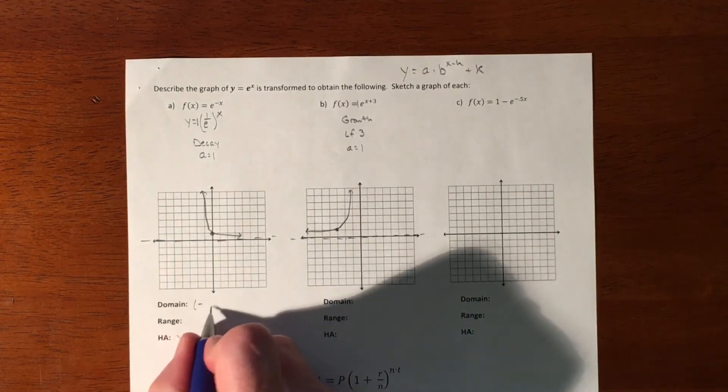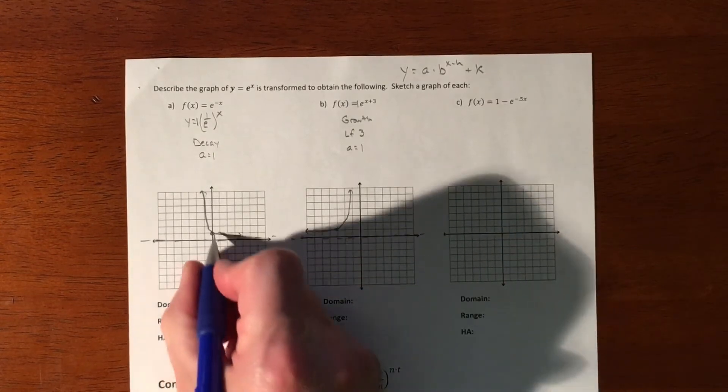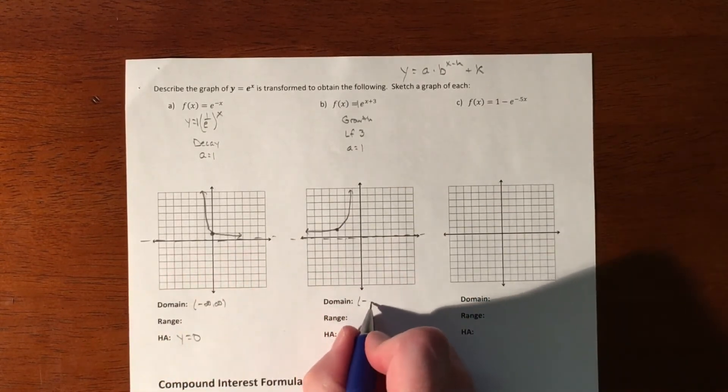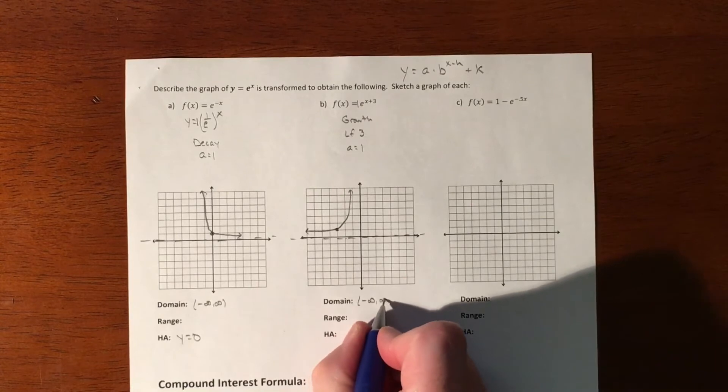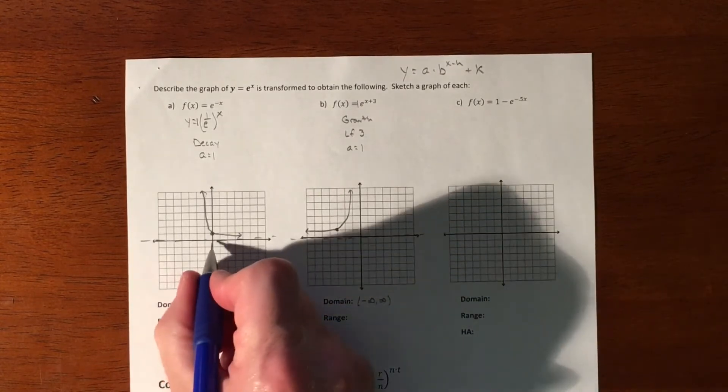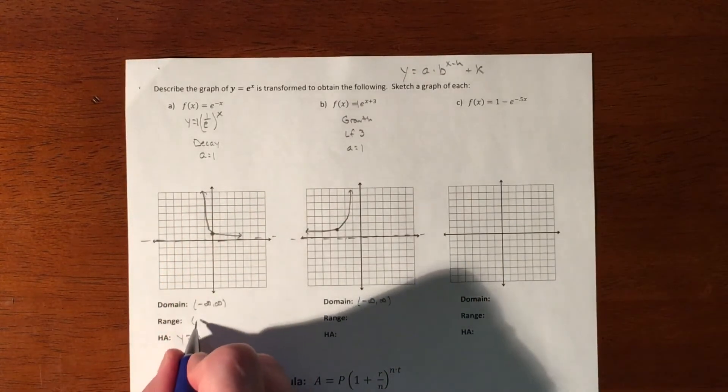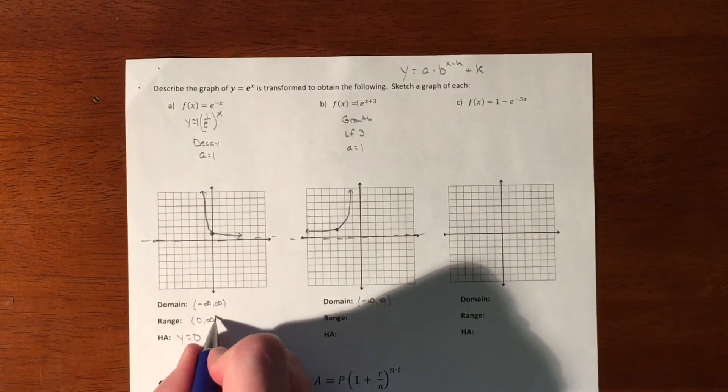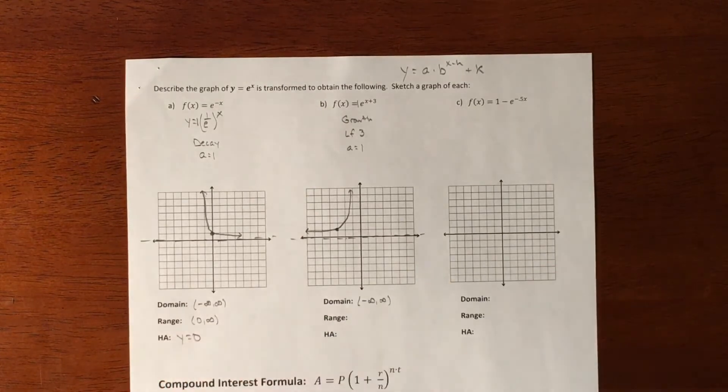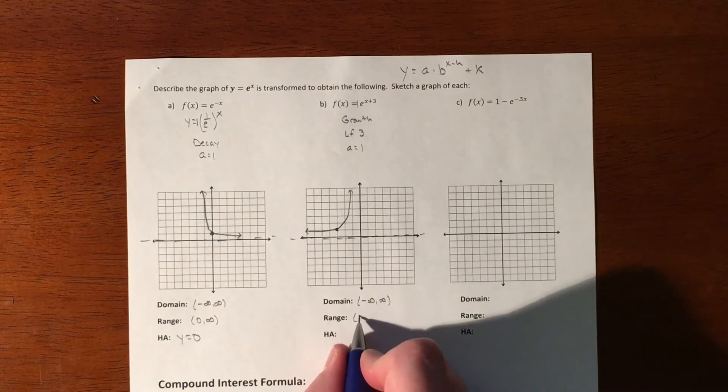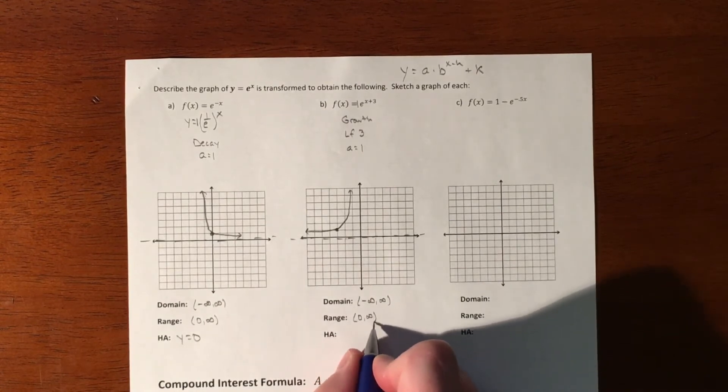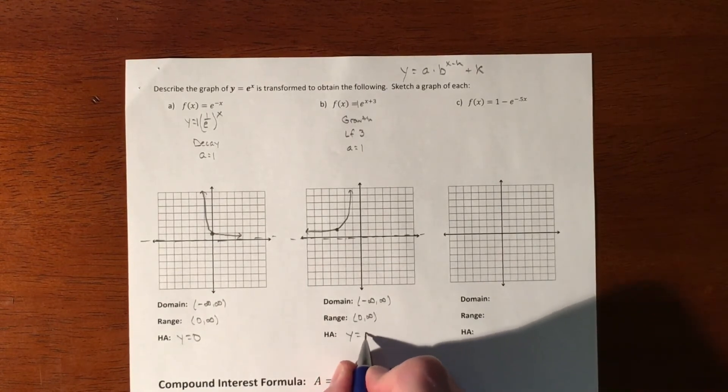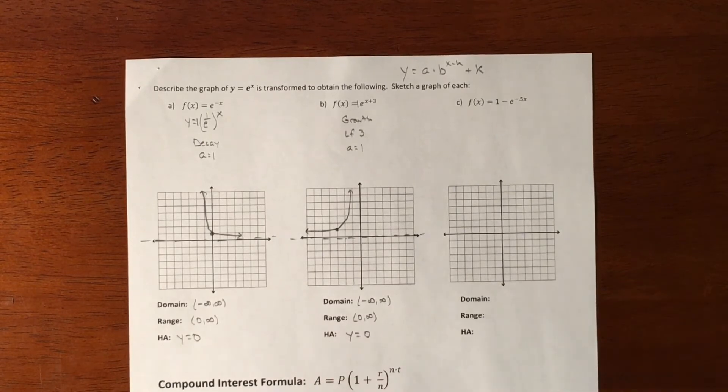And then back here, domain. Domains are always negative infinity to infinity. This graph goes left and right. This graph goes left and right forever. Our range is from 0 up. So 0 to infinity. And our horizontal asymptote didn't change at all. Our range here is also from 0 to infinity. And our horizontal asymptote is still at 0.